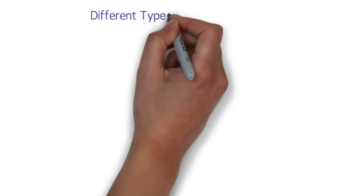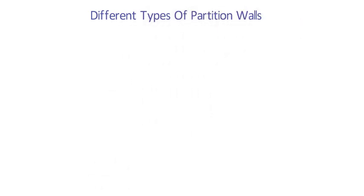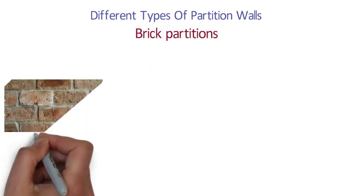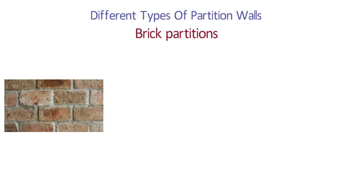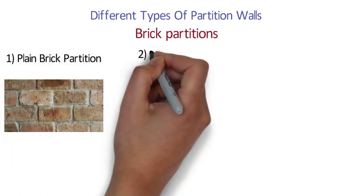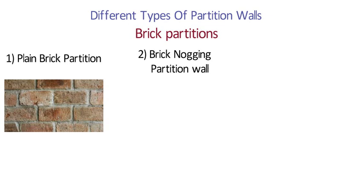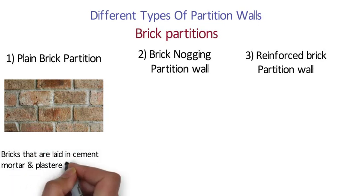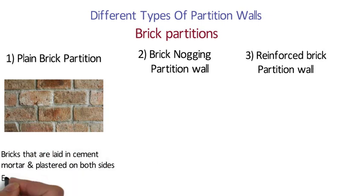Different types of partition walls: Depending upon the material used, partition walls can be divided into the following types. Brick partitions are one of the most common and budget-friendly types. There are three types: Plain Brick Partition, Brick Nogging Partition, and Reinforced Brick Partition. Plain brick partition walls are built using bricks laid in cement mortar and plastered on both sides. They are extremely strong, soundproof and resistant to fire.